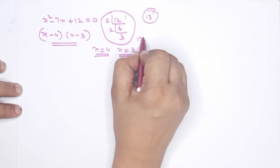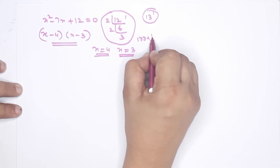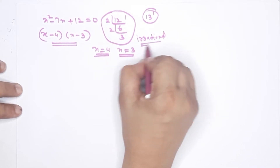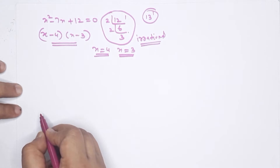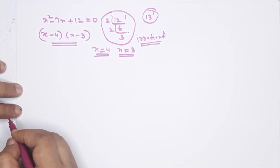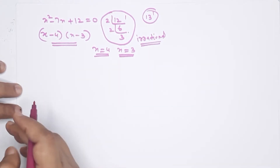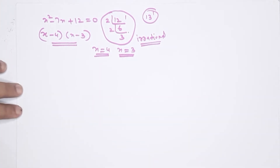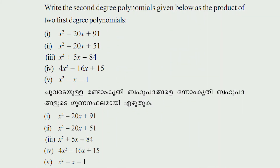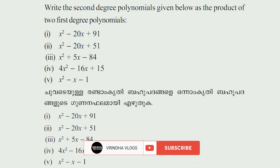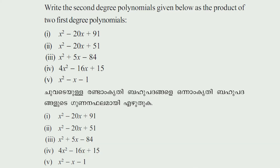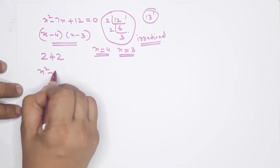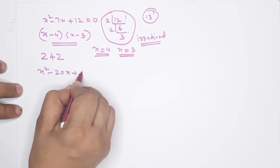This gives irrational solutions. In some cases we can't use this direct method — we use the quadratic formula or factorization. Now the first question on page 242: write the second-degree polynomials below as the product of two first-degree polynomials. The polynomial is x²-20x+91.